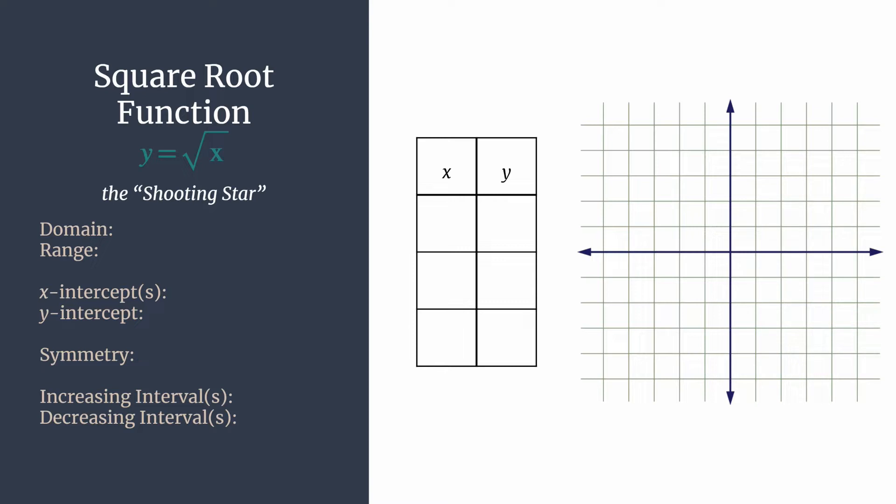We know that normally if we're creating a table to sketch a graph for the first time, we choose negative one, zero, and one as our x's. So this is the first function of our essential functions where that's not going to work. We're going to have to make a small adjustment, and that's because the square root of negative one is not a real number. We cannot work with that. It does not show up as anything on the graph, so we'll just put a dash, or you can put undefined. So no negative x's are allowed in the square root function.